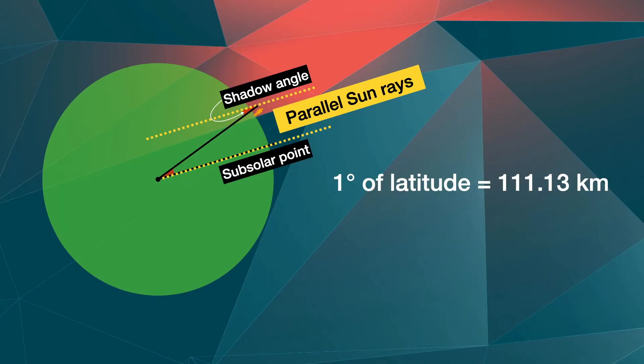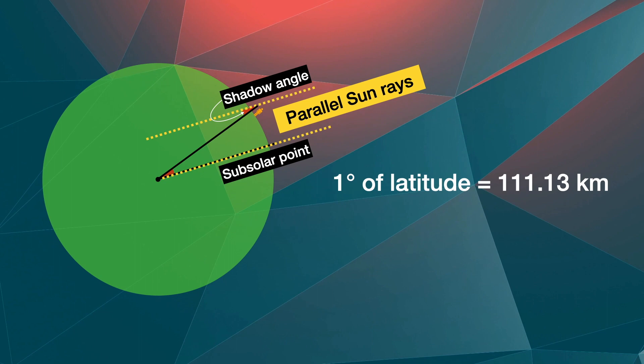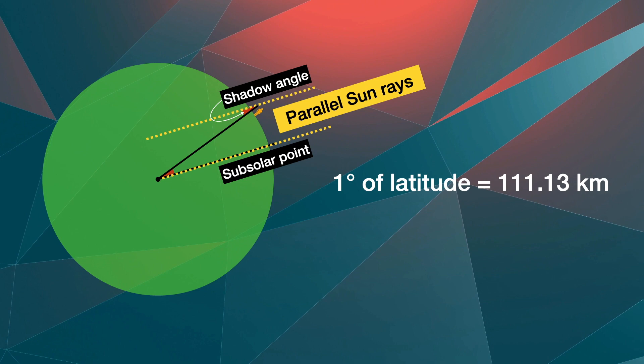The shadow angle is the degrees of latitude between you and the point on earth where the sun will be directly overhead for that day. The distance between you and that point can be found by multiplying the shadow angle by 111.13 kilometers, since that is the distance between each degree of latitude.